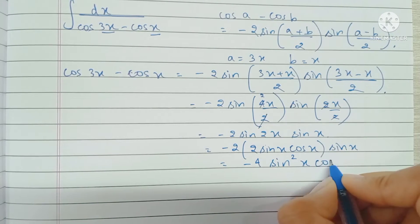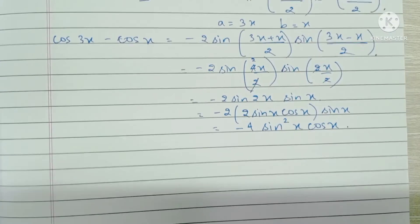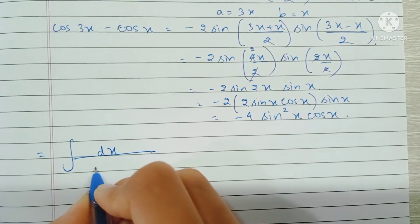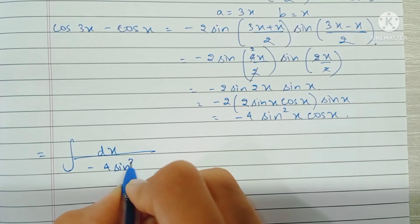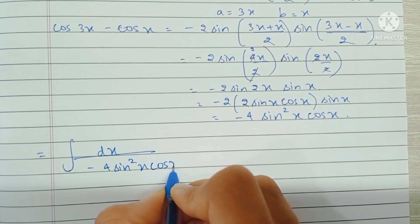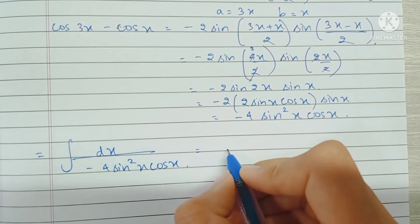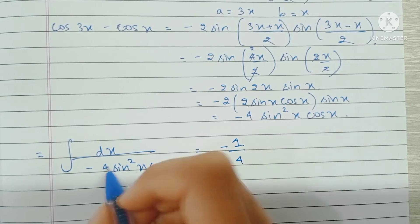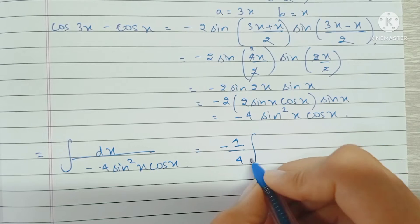Now our integral becomes the integral of dx by minus 4 sine squared x cos x. I can take the constant outside; we have the constant minus 1 by 4 right over here.